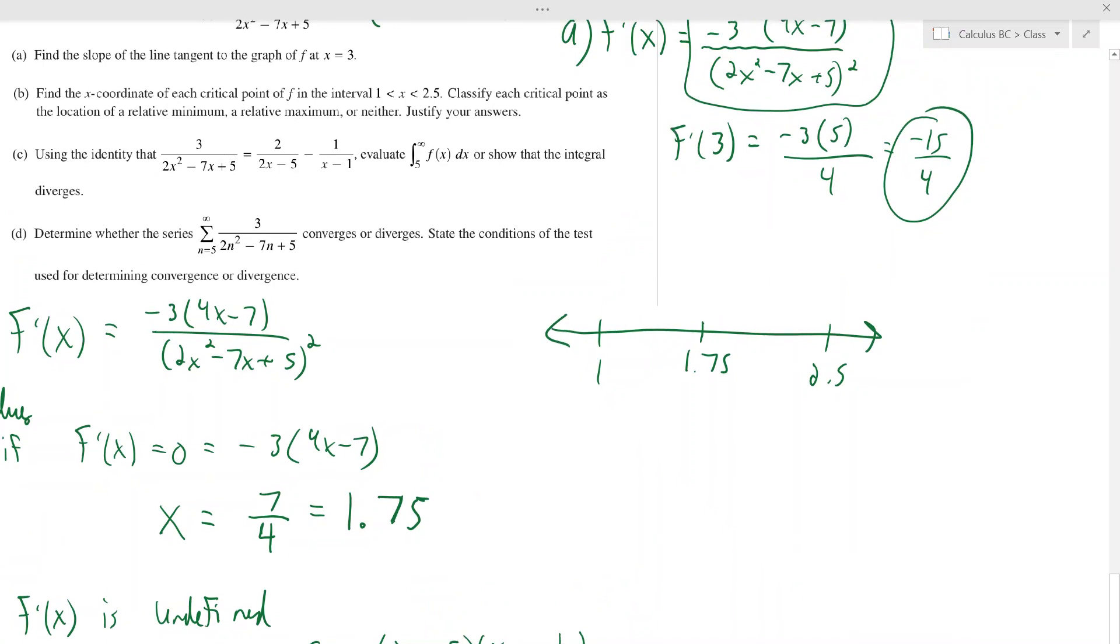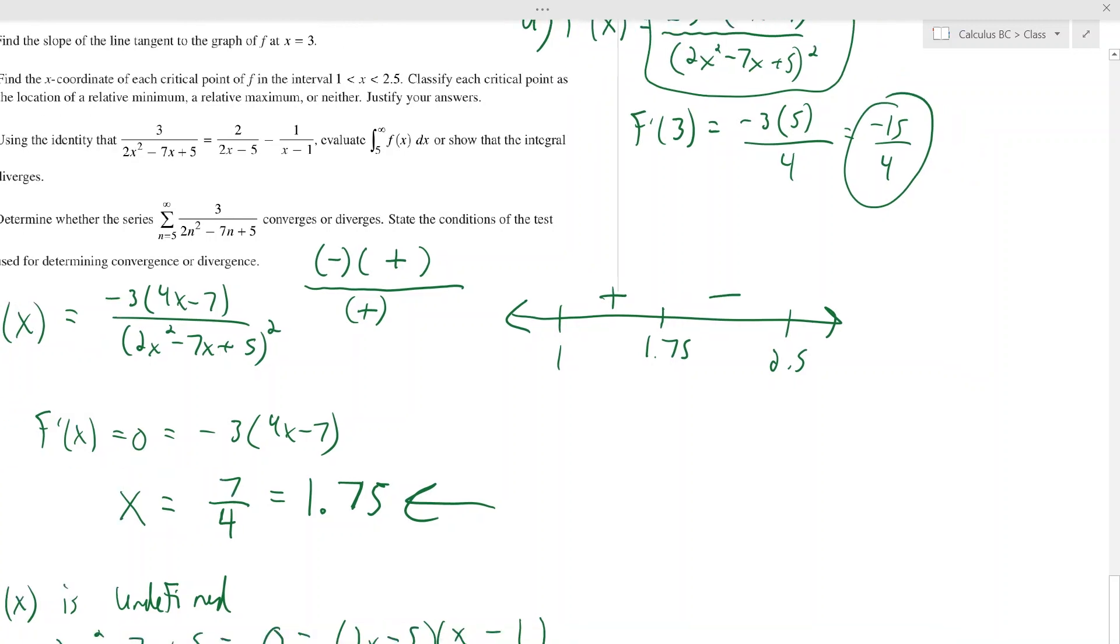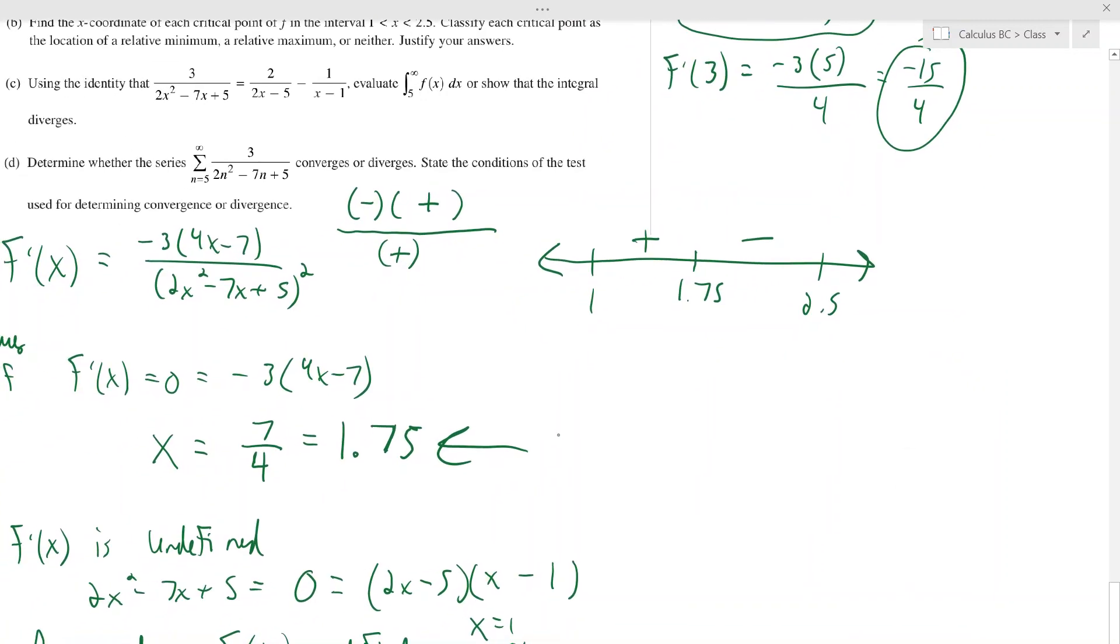Just gotta see what's happening here. So essentially what's going to happen when you check these, you can put in like 1.7 and 1.9 or something like that, or two if you want. But here's what's going on. This whole derivative is made up of a negative 3, which is a negative number, times 4x minus 7, over something squared, which is a positive number. So the only thing that can really change sign is that 4x minus 7, and it changes sign at 1.75. That's what we found. So if you plug in something less than 1.75, you're going to get a negative, which makes this whole thing positive. And if you plug in something greater than 1.75, you're going to get a positive, which makes this whole thing negative.